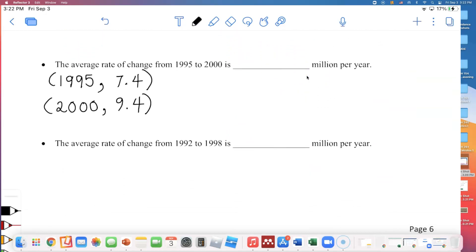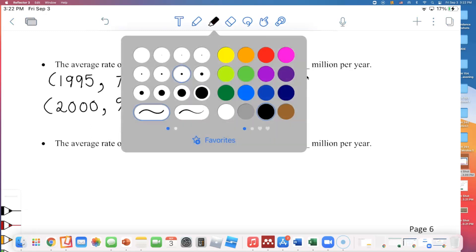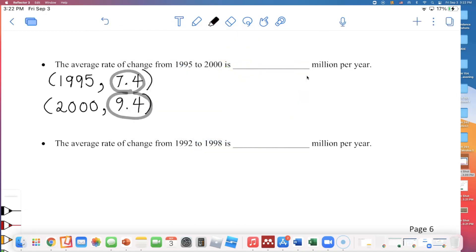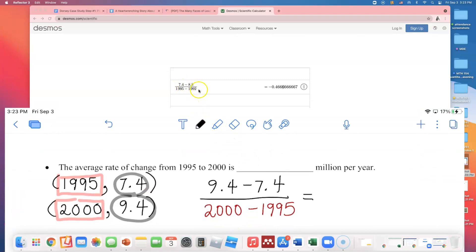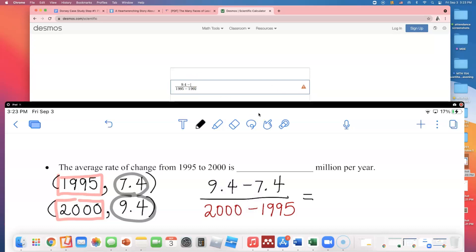If I set up the rate of change formula, I will subtract the y values, 9.4 minus 7.4, and put that on top. And I'm going to divide this by the change in x's, which is 2000 minus 1995. So in that five-year interval, how much did it go up by? I'll use this fraction format. I'll type in 9.4 minus 7.4, but in the bottom of the fraction, let's change that to 2000 minus 1995.